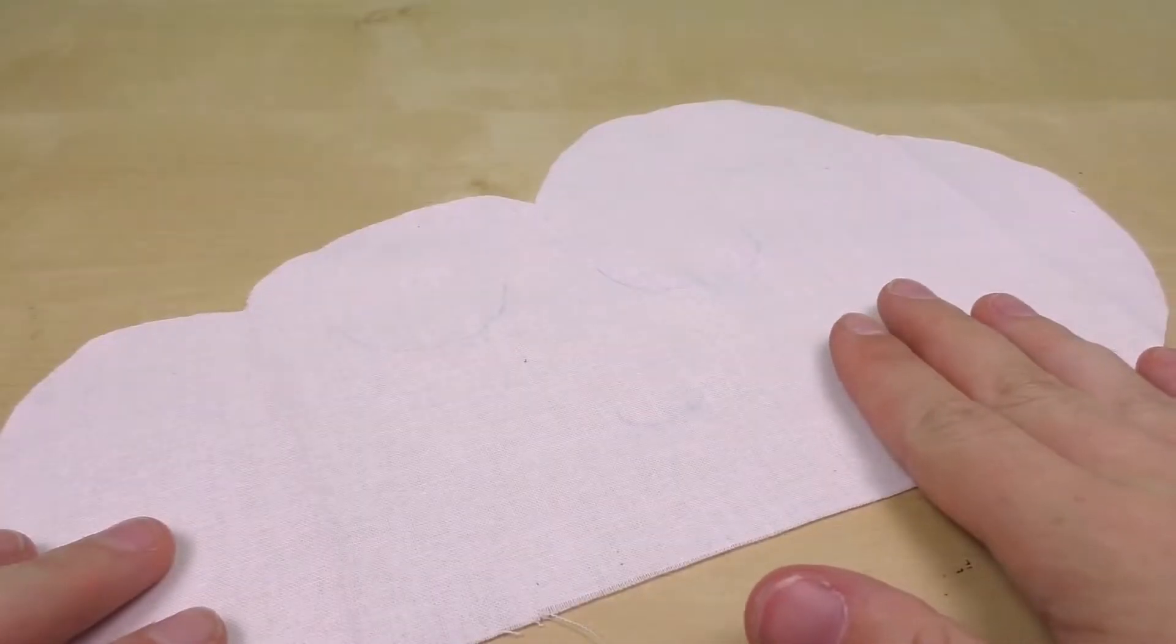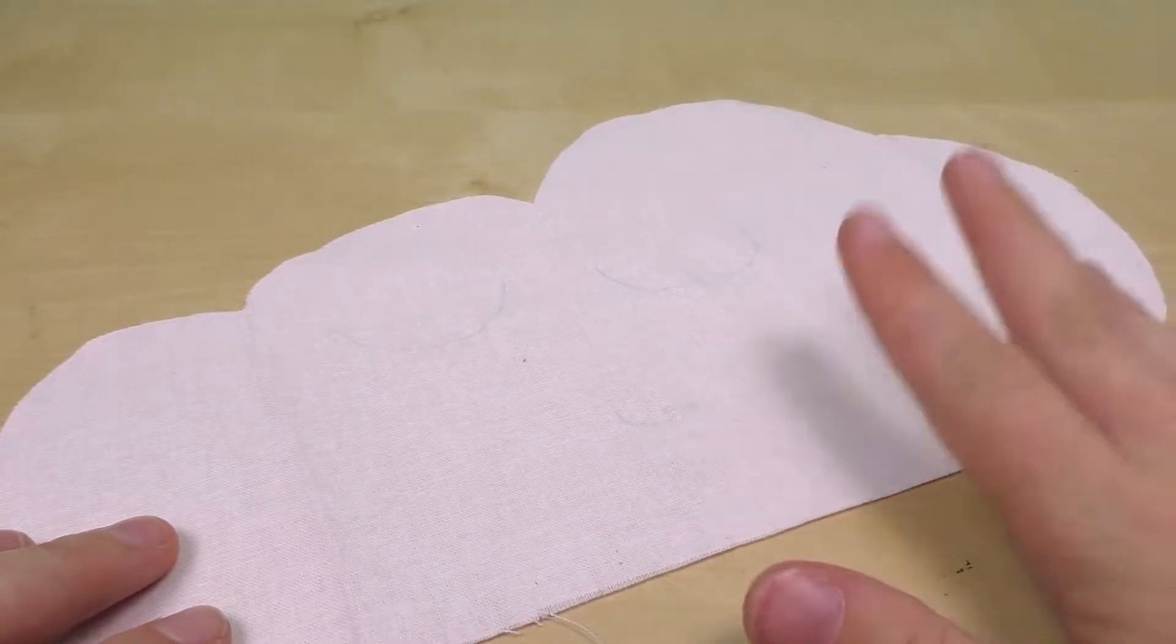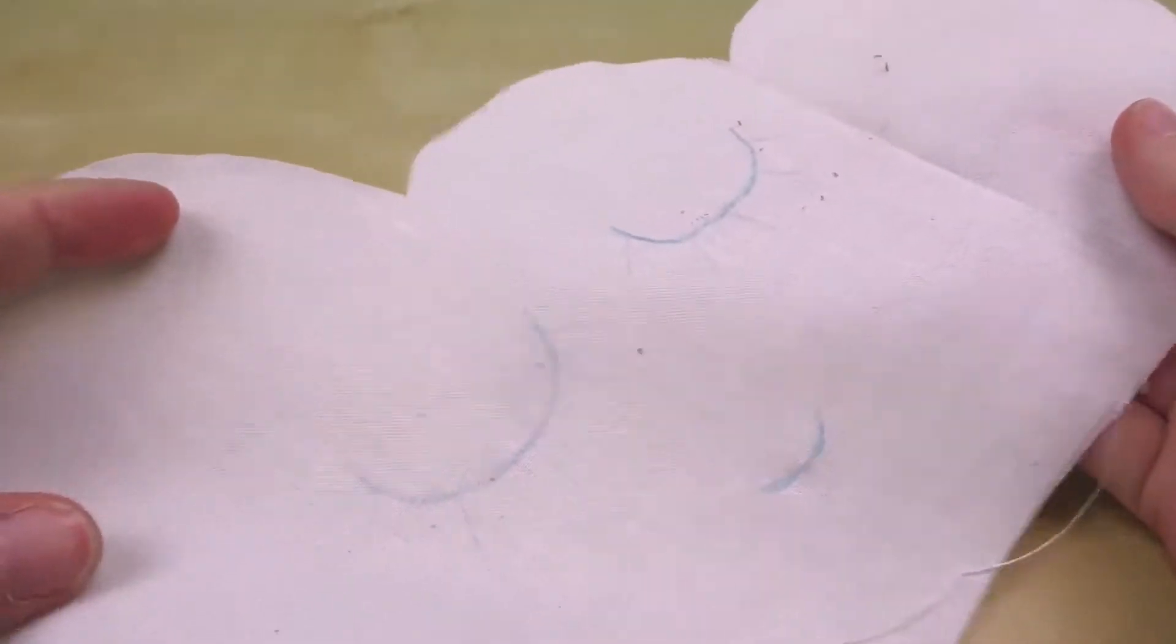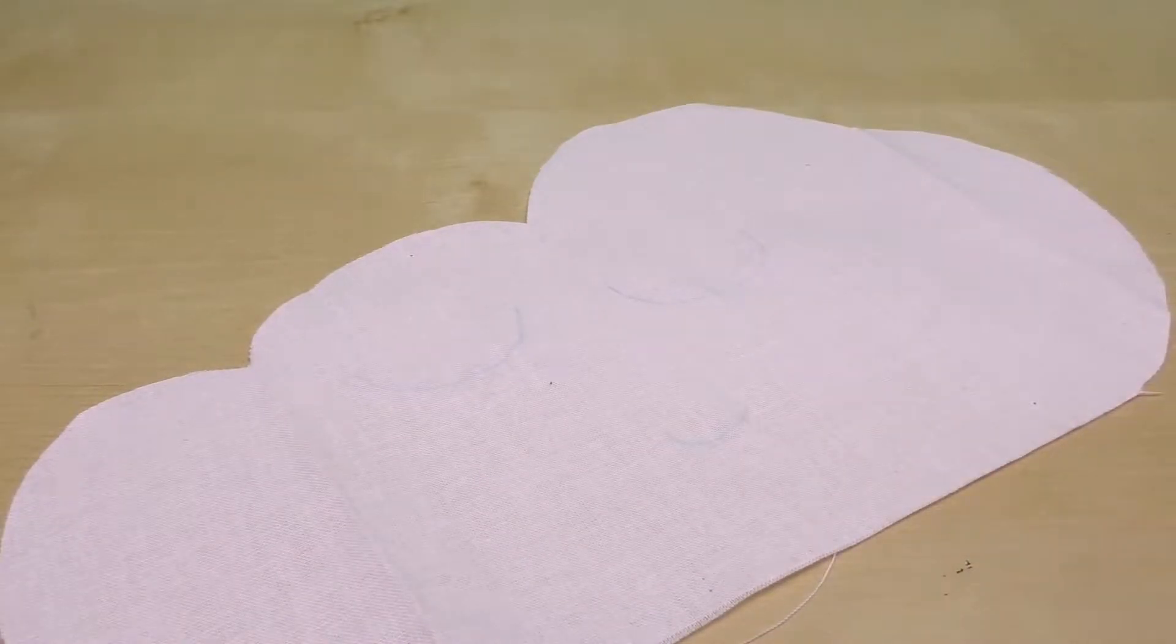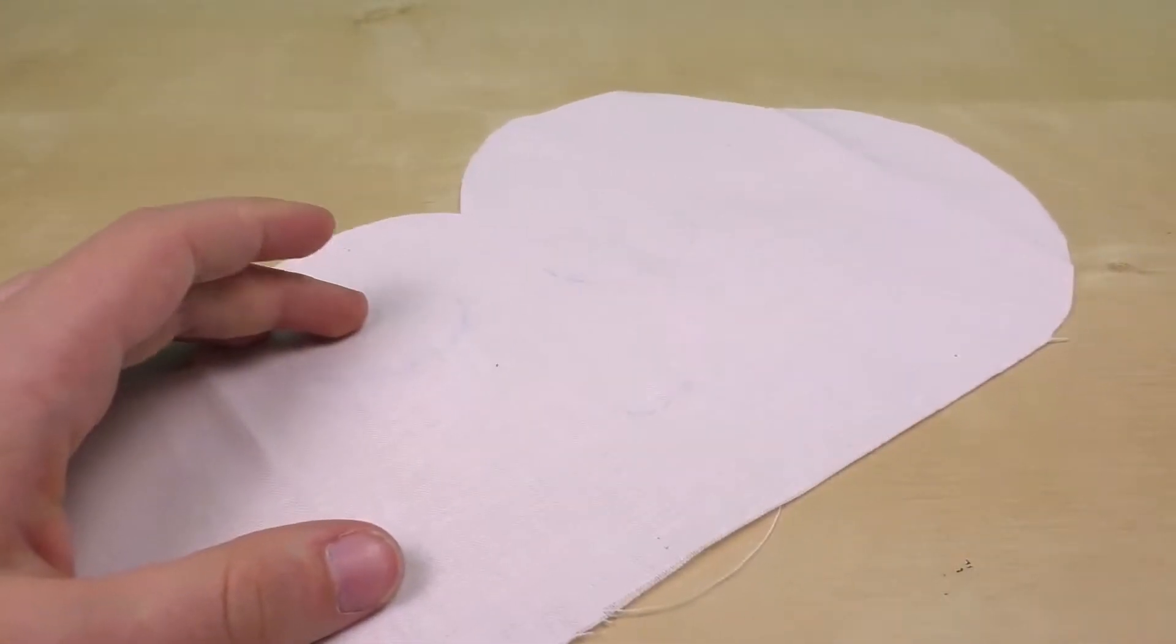So here I am now. I turned it inside out and I separated the pieces. Here is the front side. Now I also marked this on this side so that it's the same on both.